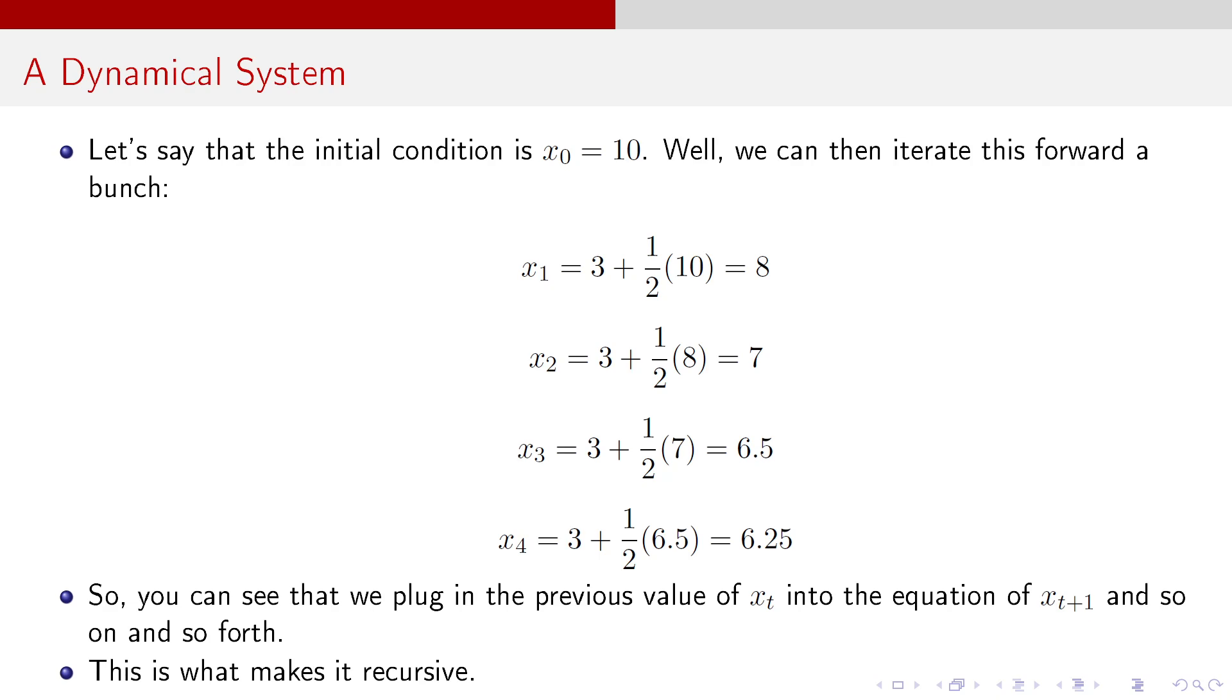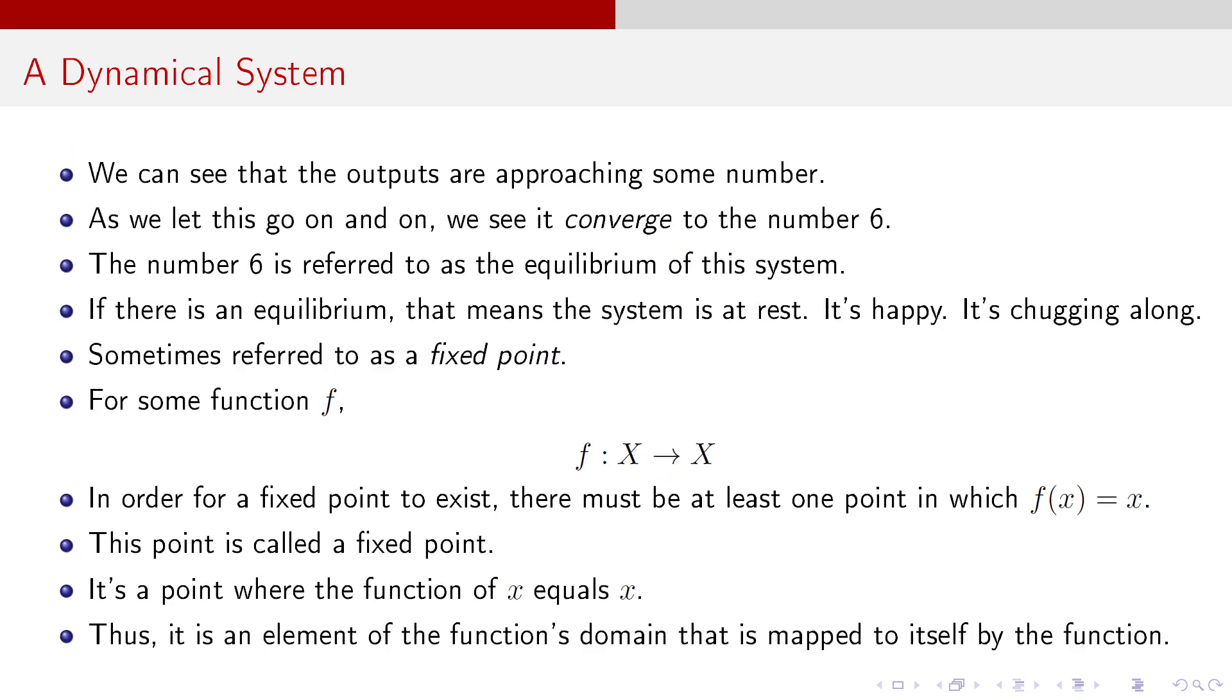So you can see, if I plug the previous value of X into the equation of X_{t+1}, and so on and so forth, it's now recursive. But here's the interesting thing. It's getting smaller, but it's getting smaller by less and less each time. Here, it drops by 1. It drops by 0.5. It drops by 0.25. Looks like it's approaching something, right? Maybe it's converging to something. Well, if we were to let it go on and on and on, we would see that it actually converges to the number 6. The number 6 is the equilibrium of this particular system. There is an equilibrium. If an equilibrium exists, it means the system is at rest. It's happy, right? It's chugging along just fine.